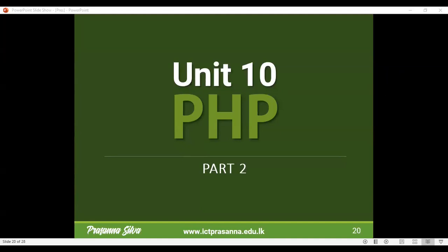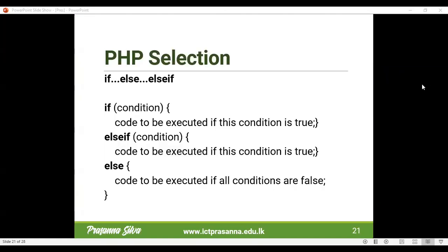In today's lesson on PHP part two, we're talking about control structures, starting from page number seven. We're starting from PHP selections. A selection — you know this control structure already, the flowcharts and all of that are exactly the same, so no particular difference from Python selections and PHP selections.